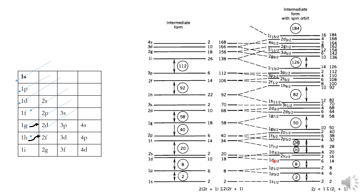The upper d level rises above the 2s level, and the upper 1f₅/₂ level rises above the 2p level, and so on. Due to this kind of level splitting from spin-orbit coupling, the magic numbers are exactly reproduced: 2, 8, 20, 28, 50, 82, 126, and 184.